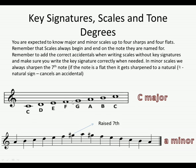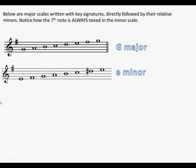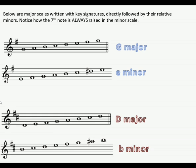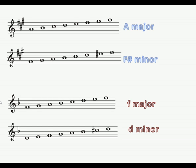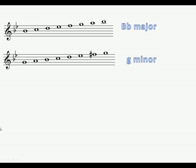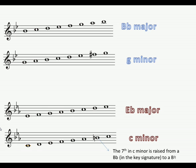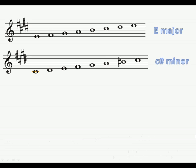C major has no sharps or flats, and A minor has a raised seventh — a G sharp. G major and E minor, D major and B minor — you can see the raised sevenths in the minors. A major and F sharp minor, F major and D minor we've learned before. B flat major and G minor we've learned with two flats. E flat major and C minor — and this is where we raise the seventh with a natural because the key signature has a B flat.